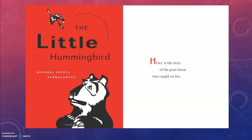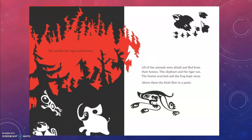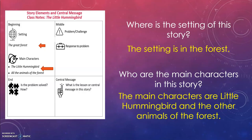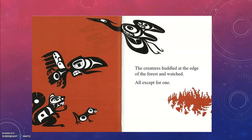The Little Hummingbird. Here is the story of the great forest that caught on fire. The terrible fire raged and burned. All of the animals were afraid and fled from their homes. The elephant and the tiger ran. The beaver scurried and the frog leapt away. Above them, the birds flew in a panic. The setting is in the forest. The main characters are the Little Hummingbird and the other animals of the forest.